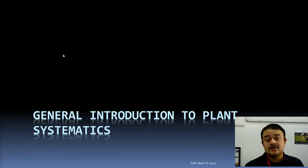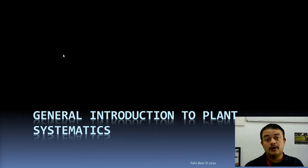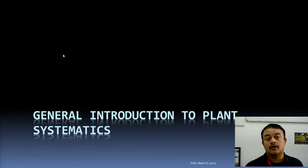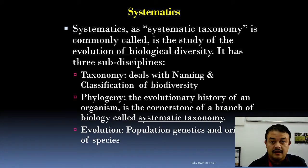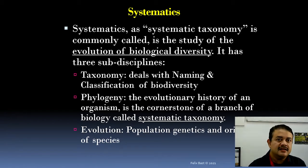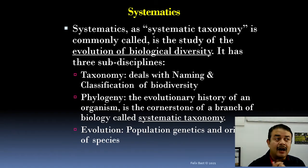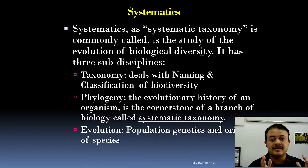Nowadays everybody is talking about systematics — it is a better term than traditional taxonomy. Modern taxonomists are called systematicists. Systematics, or systematic taxonomy, is the study of the evolution of biological diversity. Biodiversity includes all organisms on planet Earth, present and past, and systematics is about how these organisms are related to each other through evolution. All these subjects are really interrelated, and we need a holistic picture.